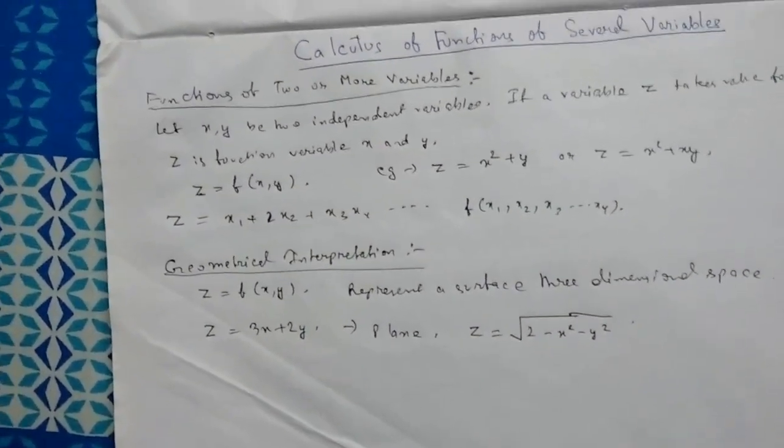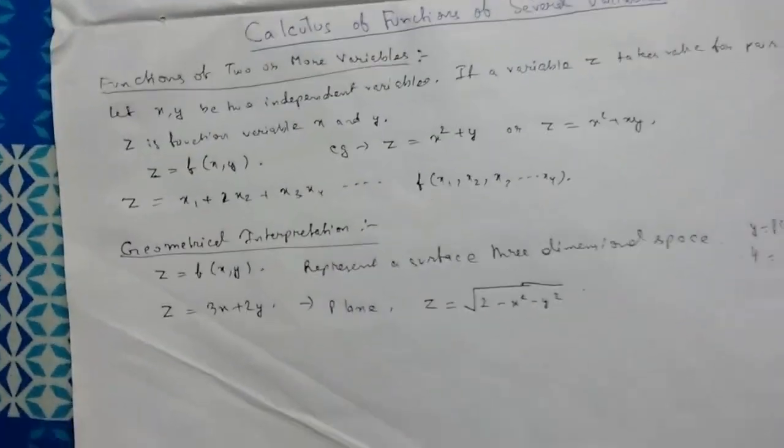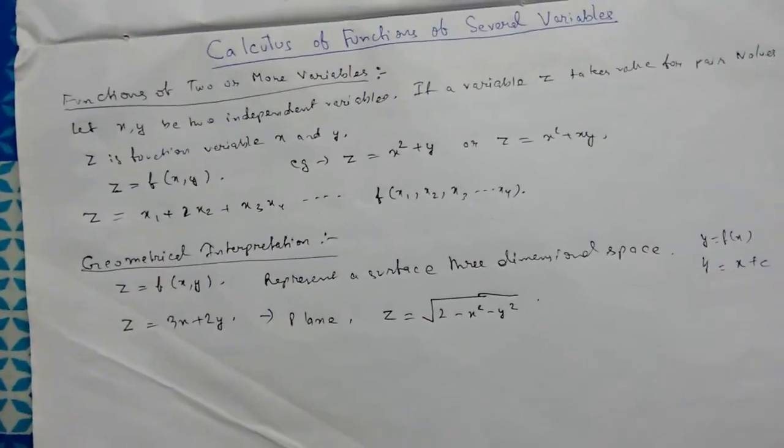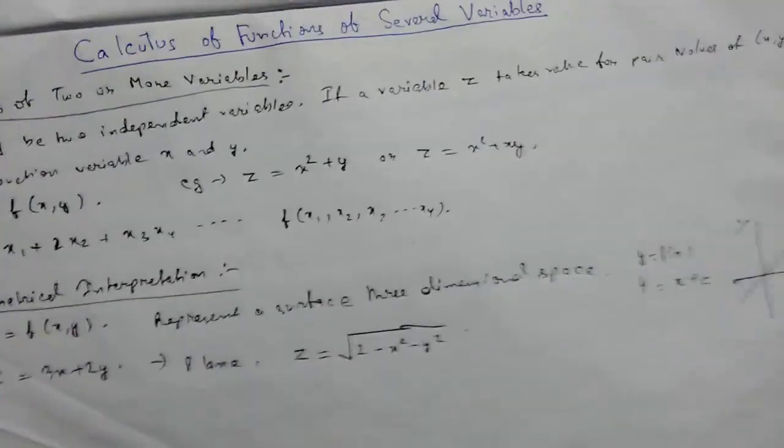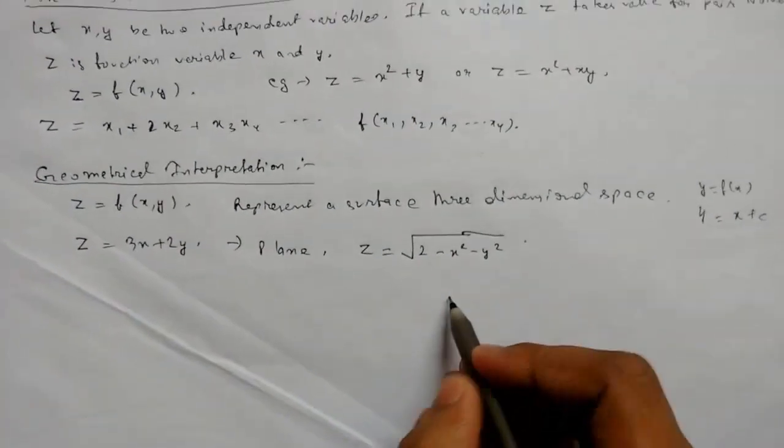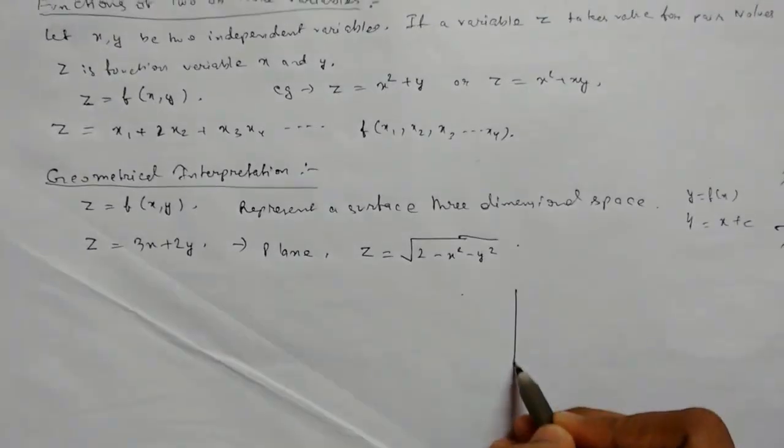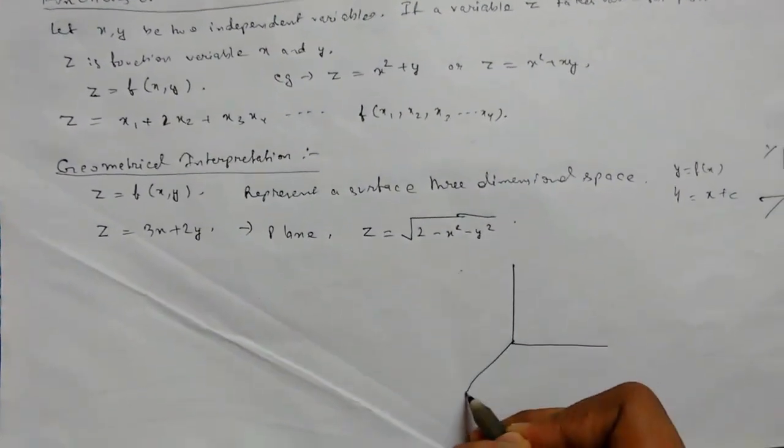This represents a surface in three dimensional space. So we know that always a two variable will represent a surface or a plane. So let me show you by a coordinate axis.